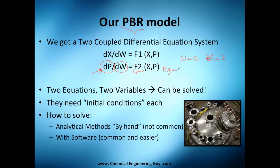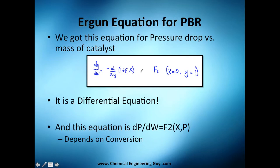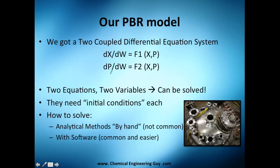When we mix our design equation, rate law, and some stoichiometry, we get the differential of conversion versus the differential of mass. You can see they actually depend on X and pressure. These terms depend on X and this term depends on P. Once again, the Ergun equation depends on conversion and the drop in pressure.